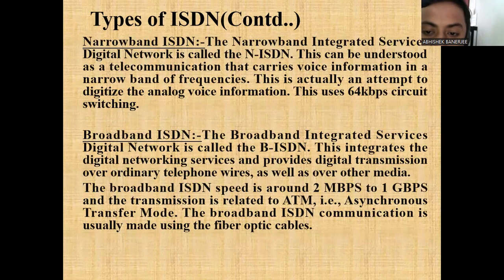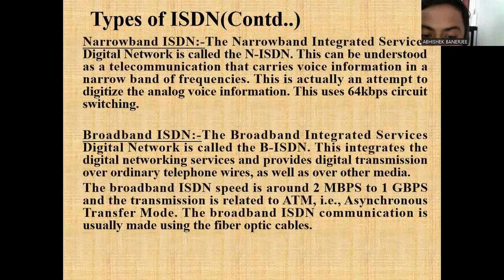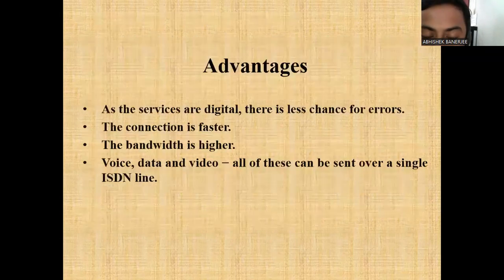The Broadband Integrated Service Digital Network is called B-ISDN. This integrates the digital network service and provides digital transmission over ordinary telephone wires. Broadband ISDN has speeds ranging from around 2 Mbps to 1 Gbps, and the transmission is related to ATM, that is Asynchronous Transfer Mode. Broadband ISDN communication is usually made using fiber optic cables.